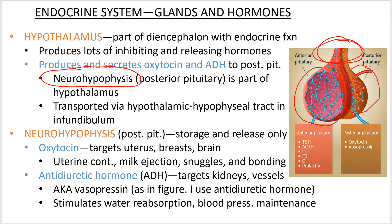Oxytocin and antidiuretic hormone are produced and secreted into that posterior pituitary. I'm going to use antidiuretic hormone because it's more descriptive and will suit our purposes better. The hypothalamic hypophysial tract is the tract that goes from the hypothalamus to the posterior pituitary.